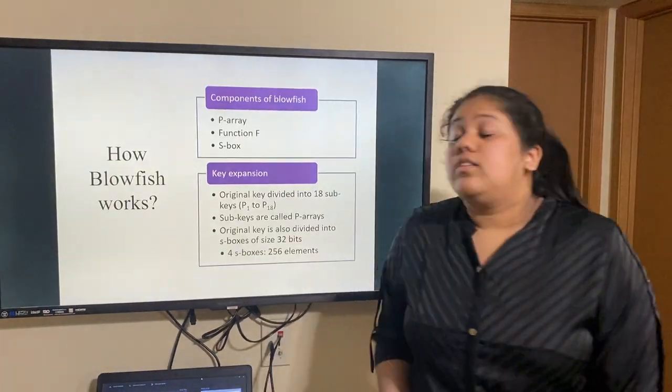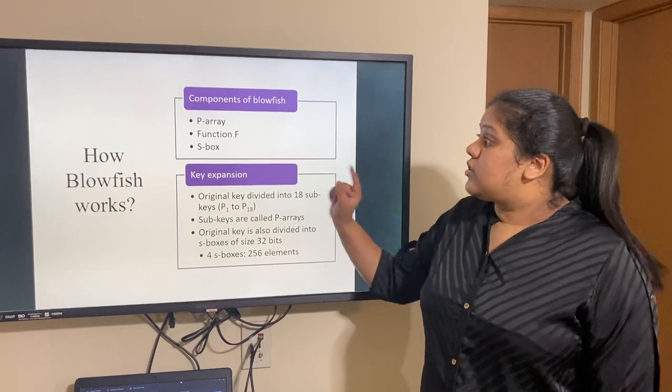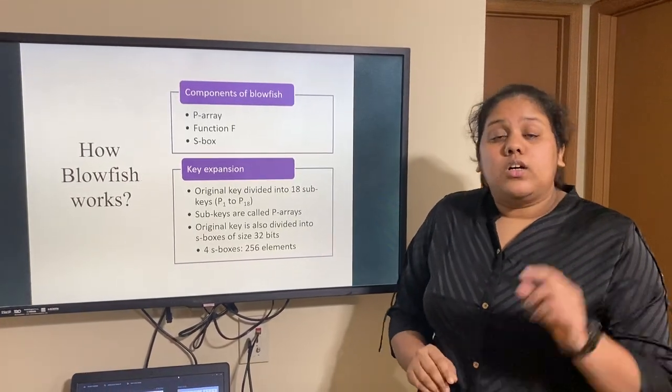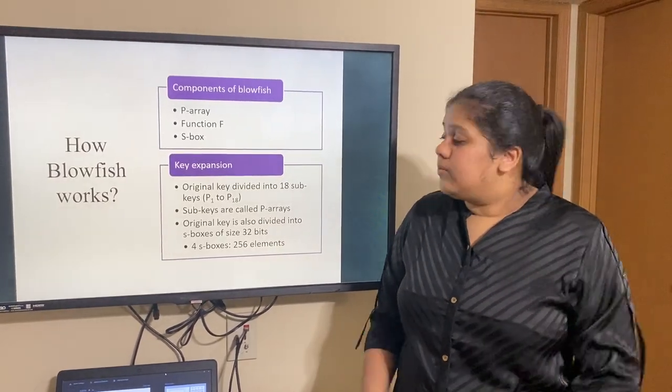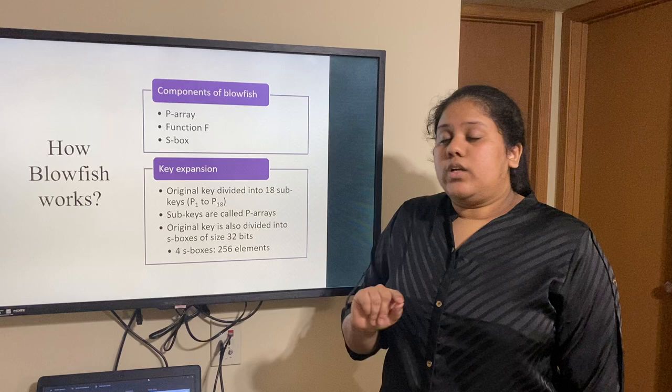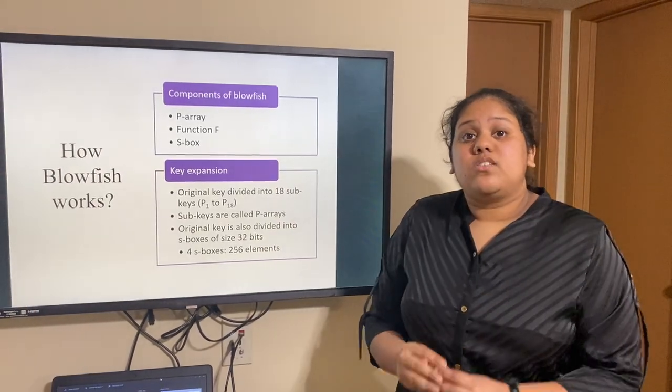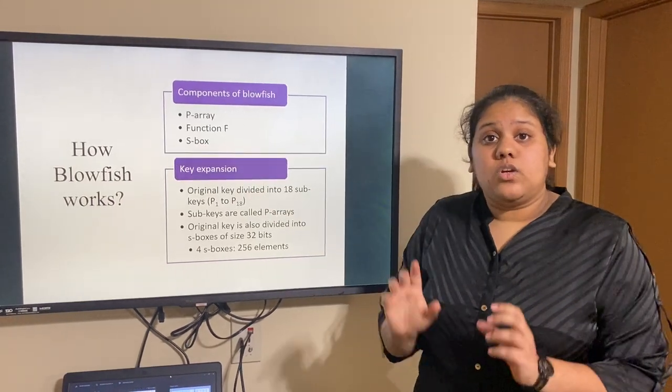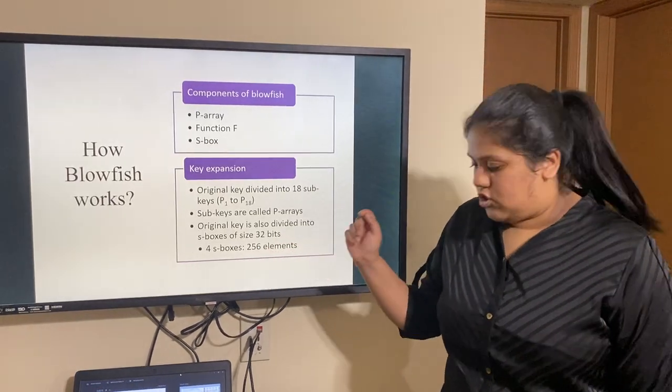Now, let's understand the working of the Blowfish algorithm, but before that we need to understand these three important components. The first component is the P array, which is a collection of subkeys or total of 18 subkeys which are derived from the original key itself and they are numbered from P1 to P18. The function F is a function that comprises of the S boxes. Now, these S boxes are 32 bits of blocks that are also derived from the original key and have 256 elements each.